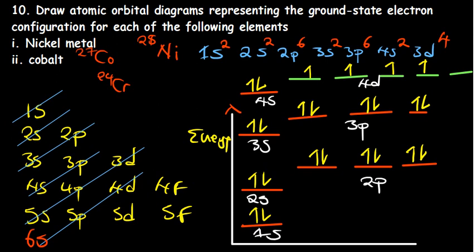For Cobalt, which ends at 27, that's 3 more electrons than Chromium (24 to 27), so we would add 3 more electrons into 3d: 1, 2, 3. For Nickel, which has one more electron than Cobalt (Z=28), we add one more electron to 3d, giving 2 electrons in the last orbital.